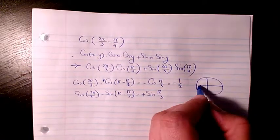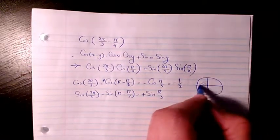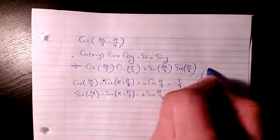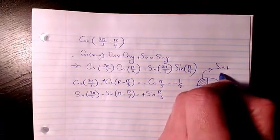Because of the cast rule. In the quadrant 2, sine is positive. Cosine is negative.